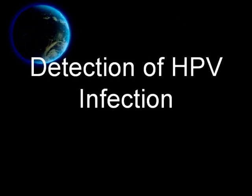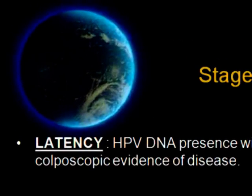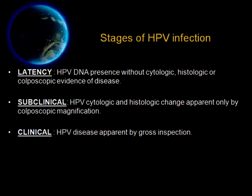How do we detect HPV infection? Before we go into detection, we should understand the pathophysiology and stages of HPV infection. There are three stages. Stage 1 is called the latent period. HPV enters the epithelium through microabrasion and resides in the epithelial cell without any intervention. In this latent phase, there will be no cytologic, histologic, or colposcopic evidence of disease, and the presence of HPV can only be detected through DNA testing.